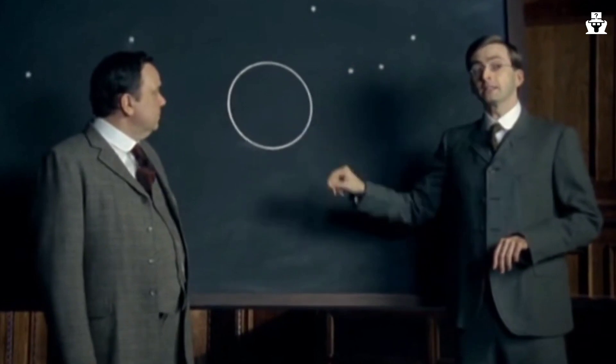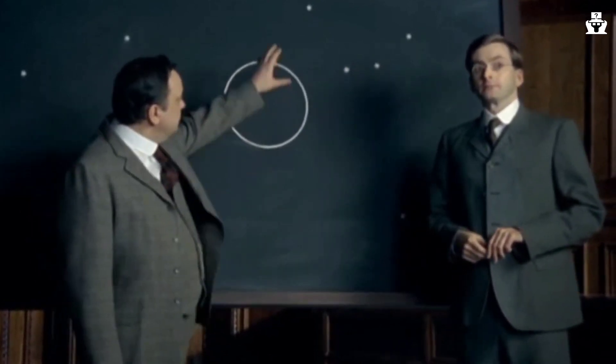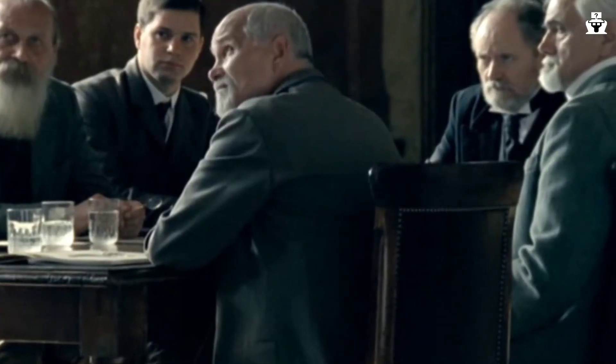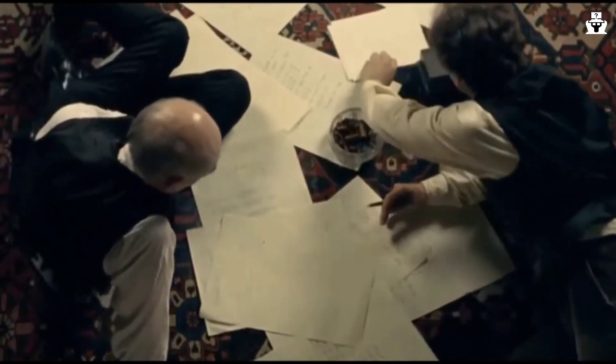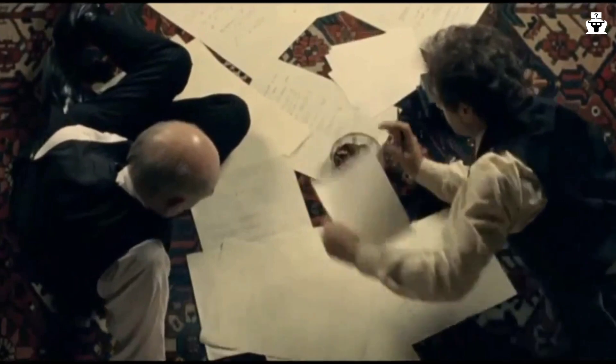Despite these challenges, Eddington was committed to testing Einstein's theory and convinced the British Astronomical Association to support his efforts. He eventually secured funding and organized an expedition to observe a solar eclipse in 1919, which provided the crucial evidence in support of Einstein's theory and cemented its place in the scientific canon.